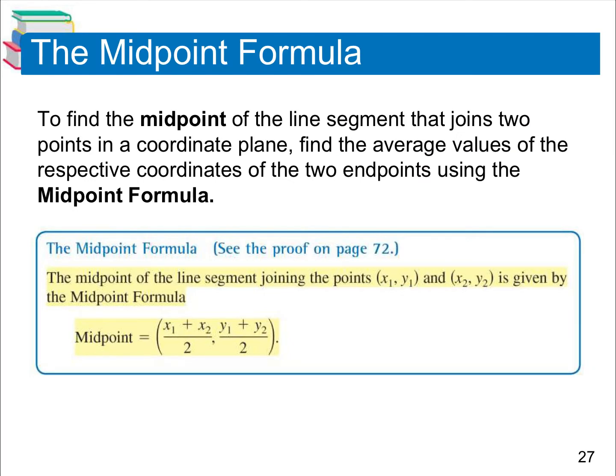The next part we're going to look at is the midpoint formula. You'll be given two points and told to find the point in the middle of them. You'll still use x₁, y₁ and x₂, y₂. For the midpoint, find your x value by taking the sum of your x values from the two points and dividing by 2. Find your y value by taking the two y values, adding them, and dividing by 2. So: (x₁ + x₂)/2, (y₁ + y₂)/2.